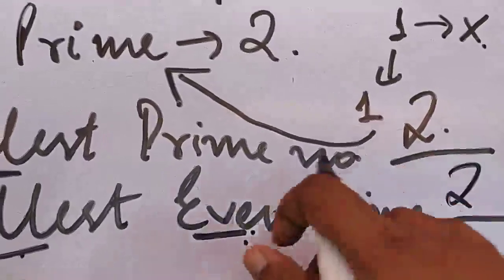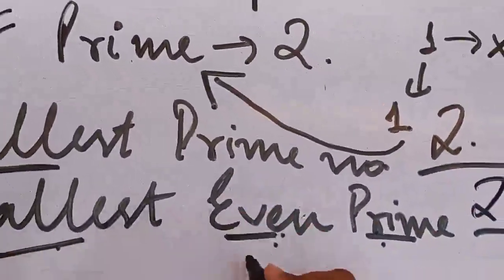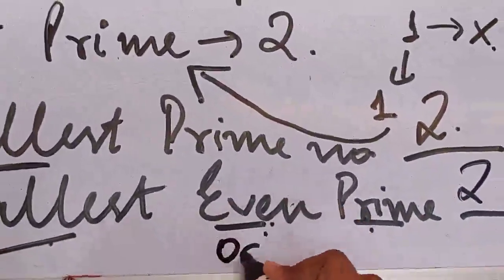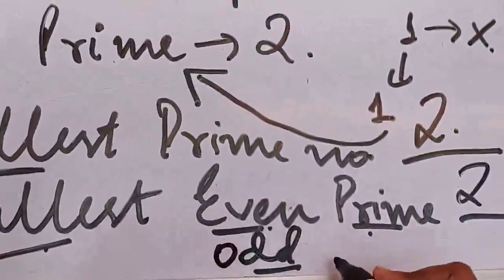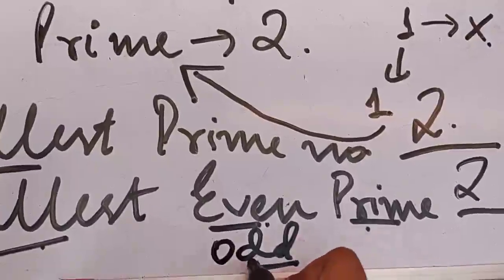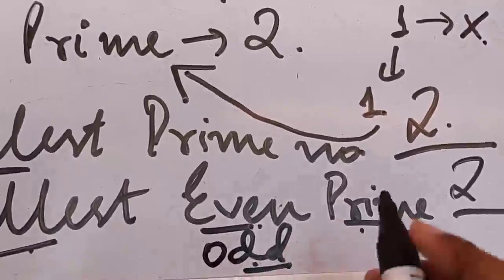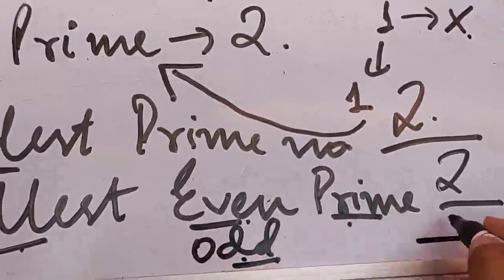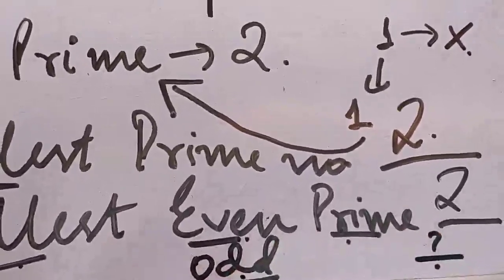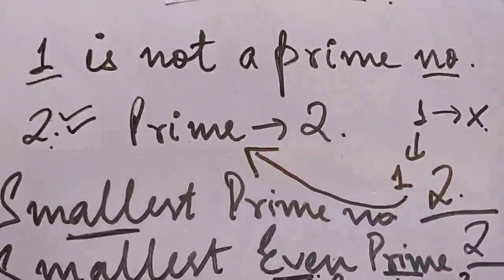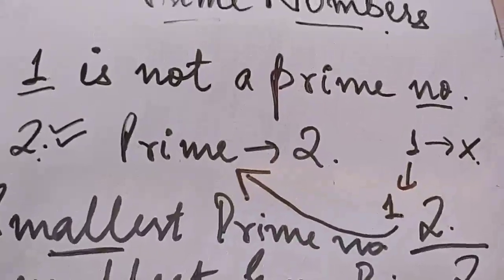Similar questions can be asked like this. Instead of even, they can give you odd. Then you will have to find the smallest, odd, and prime number. This I am leaving for you. I will have you do this type of question. Let's understand one more topic.